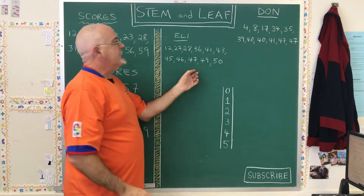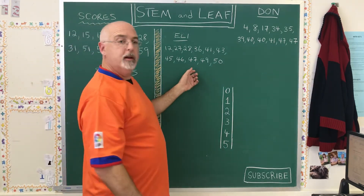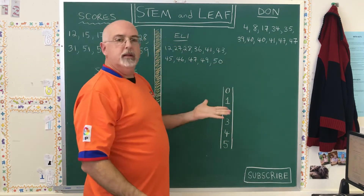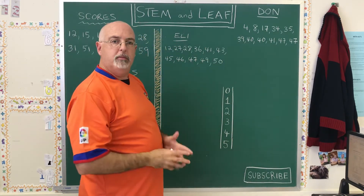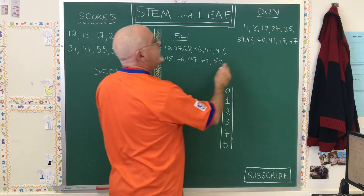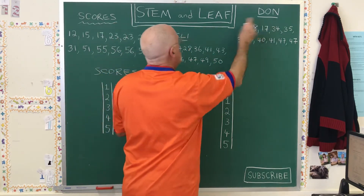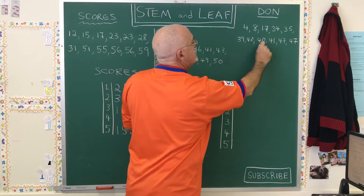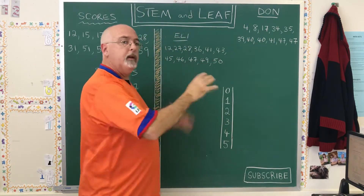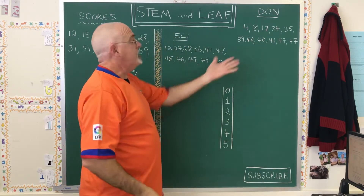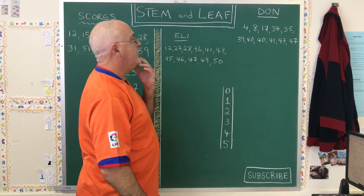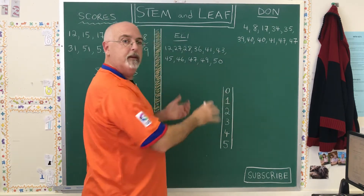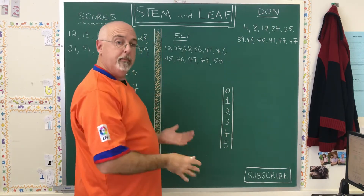In my second example, I actually have two sets of data. This is the grades on a quiz where the highest possible mark was 50, for two teachers named Don and Eli. Both teachers have 11 values, but it's not necessary for them to have the same amount. We want to put them together on the same stem and leaf table so that we can compare them easily.